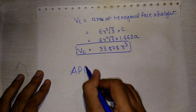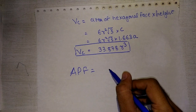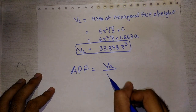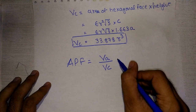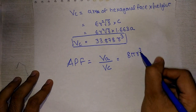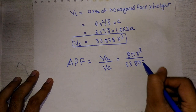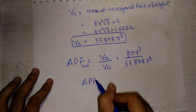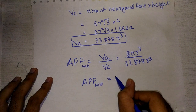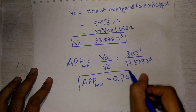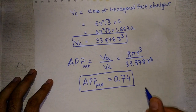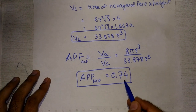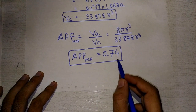Therefore, APF for HCP = Va / Vc = 8πr³ / 33.878r³ = 0.74. If you notice, the APF of HCP is the same as the APF of FCC, which is also 0.74.